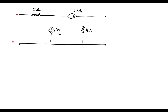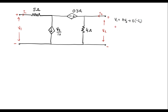Let me assume the terminal polarities: positive and negative at the input, positive and negative at the output. Let I1 be the input current, I2 the output current, V1 the voltage across the input port, and V2 the voltage across the output port. ABCD parameters are defined by: V1 = A·V2 + B·I2, and I1 = C·V2 + D·I2. Call these equation 1 and equation 2.